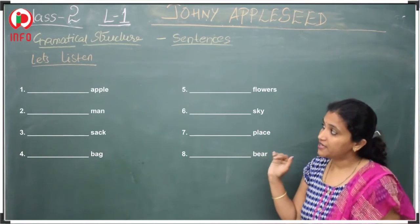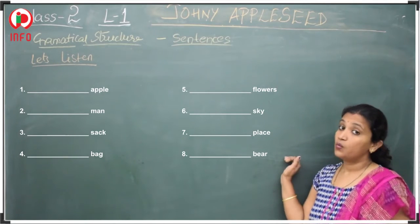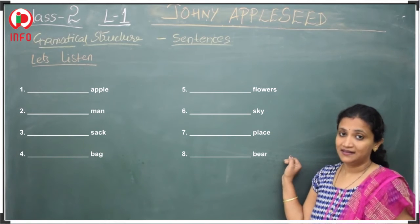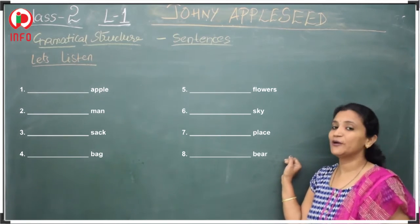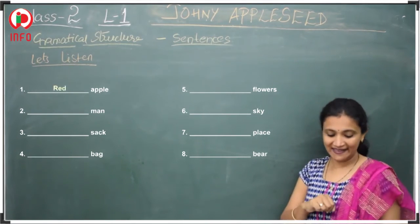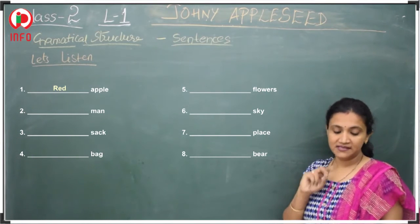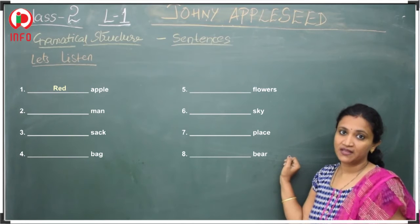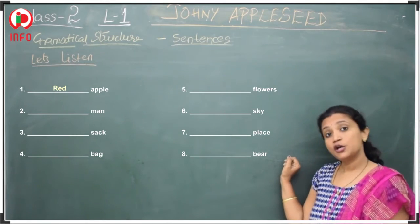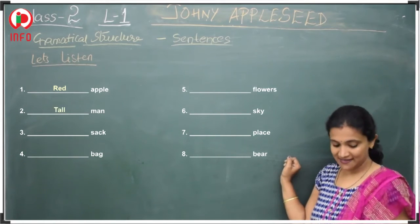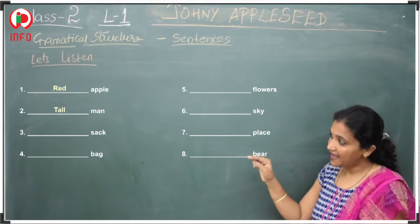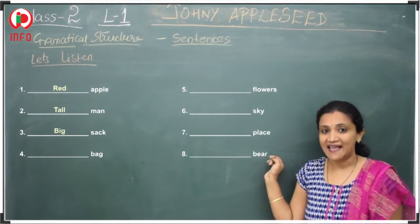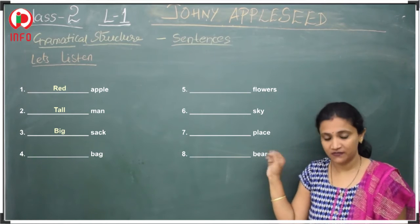First one: dash apple. What is the color of apple? Red. So you have to fill in 'red' — red apple. Second one: dash man. Tall man — yes, that's correct. Third one: dash sack. Big sack — yes, big is the correct word.